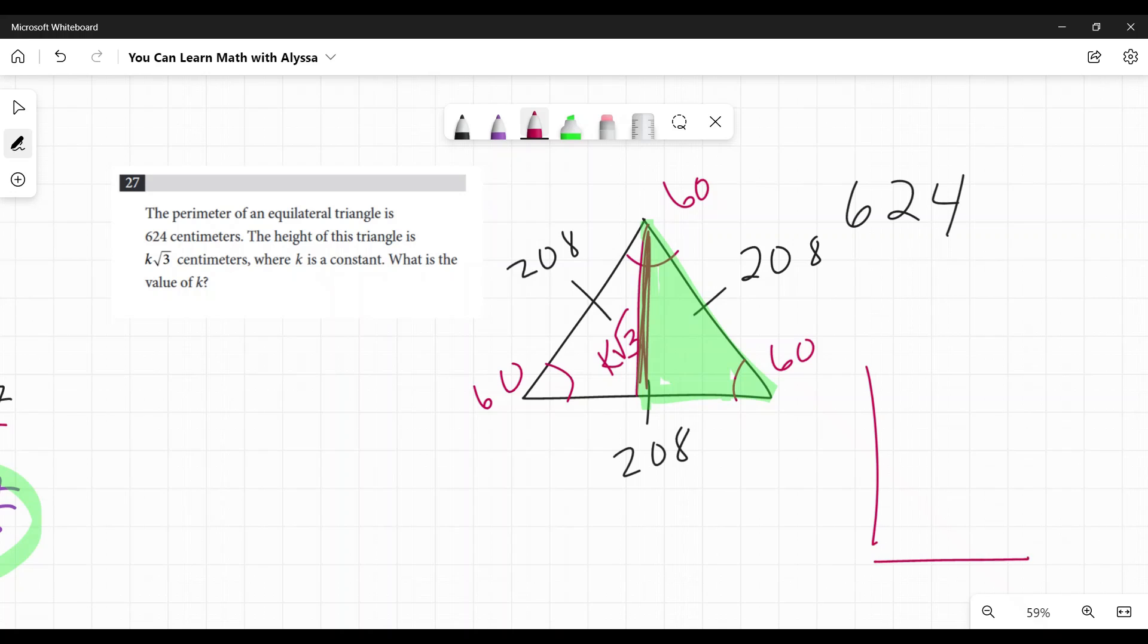I'm just going to draw it again out to the side. So this is 60, there's my right angle, there's my 30. I'm telling you this is K square root of three, and we know this side is 208.